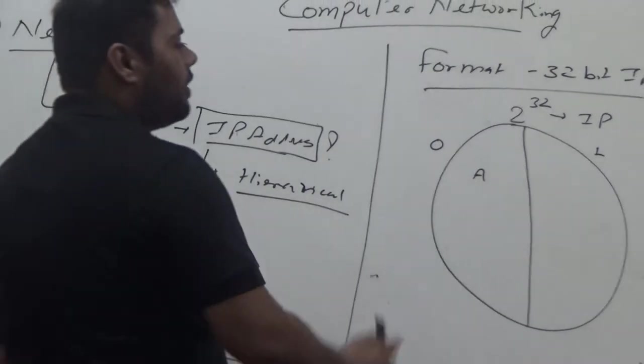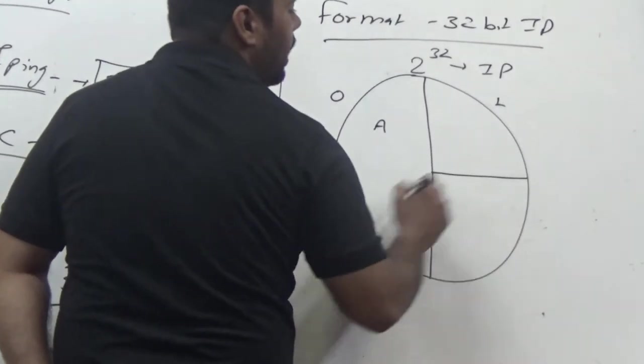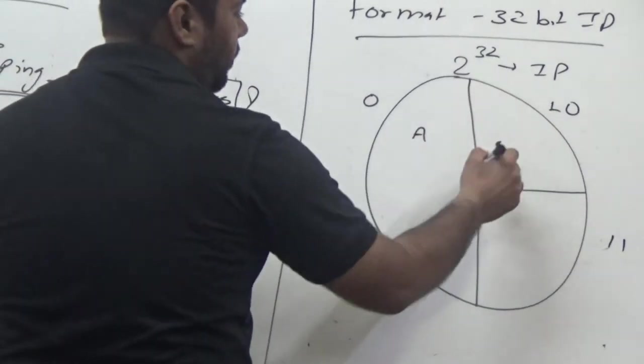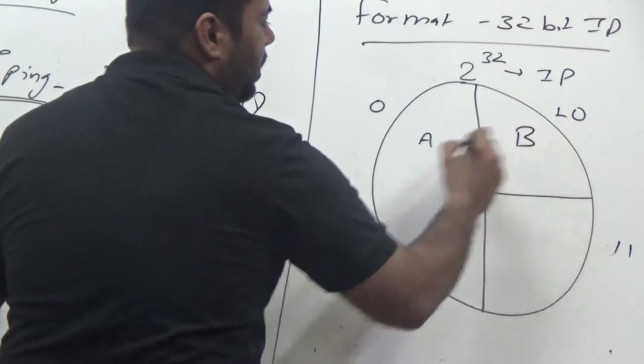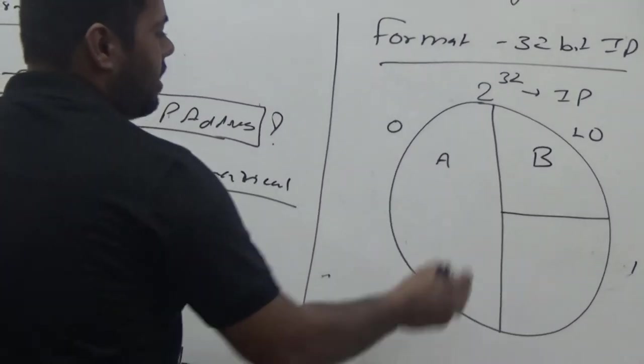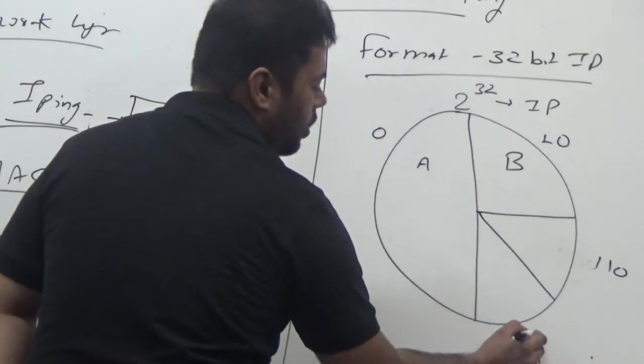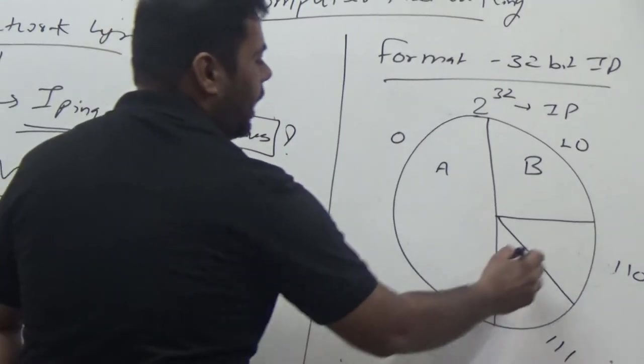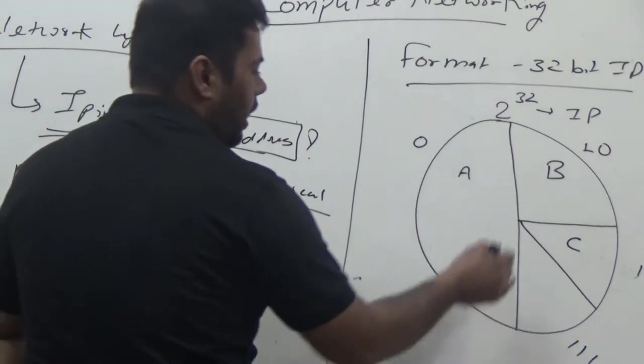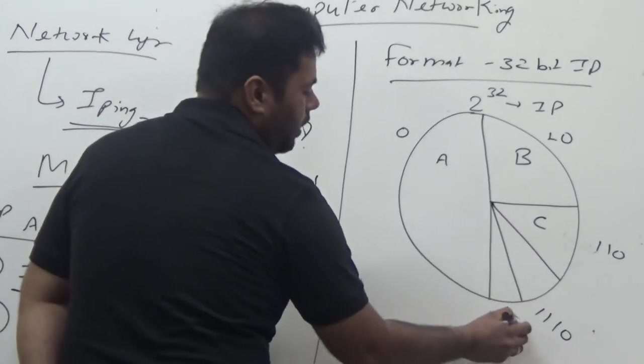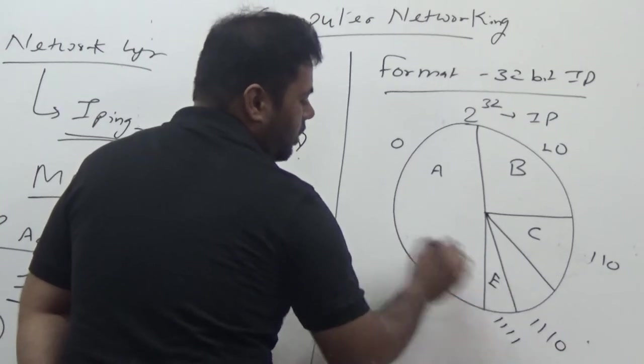The second half is further divided into two parts with addresses 10 and 11. The first half is named as B. The rest half is again divided into two halves, addresses 110, 111, and named as C. Again, the rest half is 1110, 1111, and E.